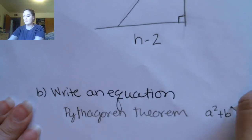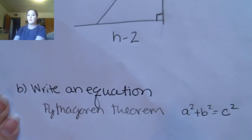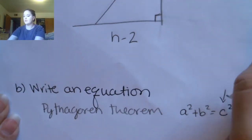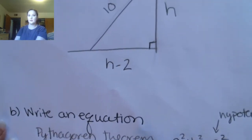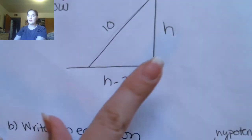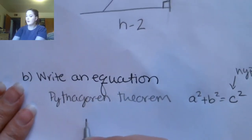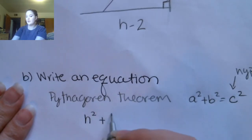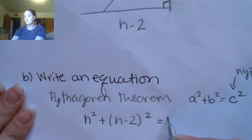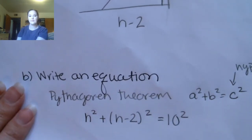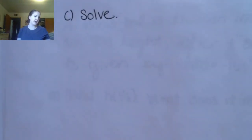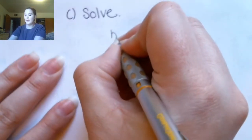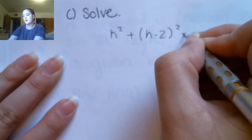The Pythagorean theorem is a² + b² = c², where these are the sides of a right triangle and c is the hypotenuse. On my triangle, 10 is the hypotenuse and h and h minus 2 are the sides. So my equation would look like h² + (h − 2)² = 10². The last part of the question says solve, so we're going to solve for h.